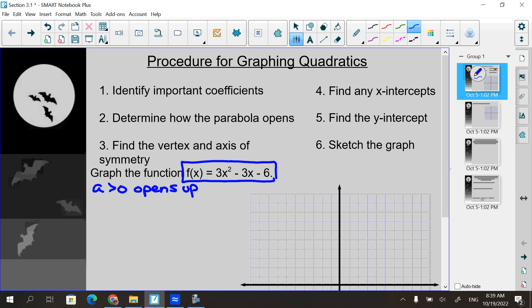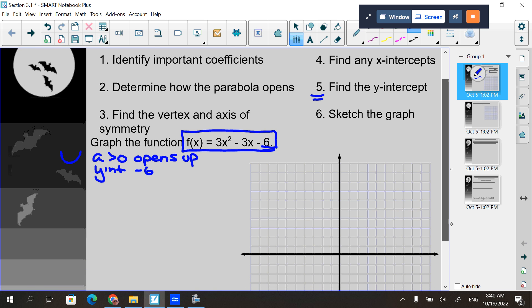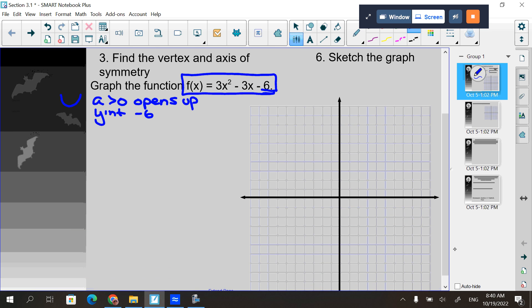I see that the a value is greater than zero. That means I know that it opens up. Another thing that I also see is that it has a y-intercept of negative six. Whatever the number is that doesn't have a letter with it, that is your y-intercept. So I know it's going to be a parabola that opens up and I know it's going to cross the y-axis at negative six. So those are probably the first two things that I make a note of.